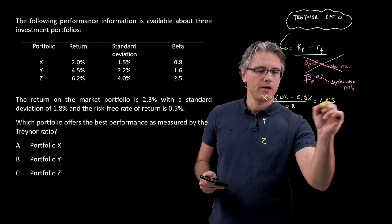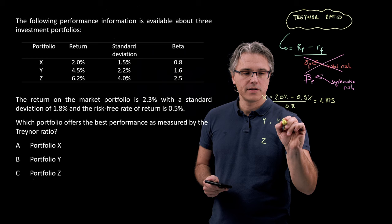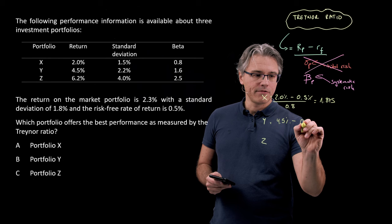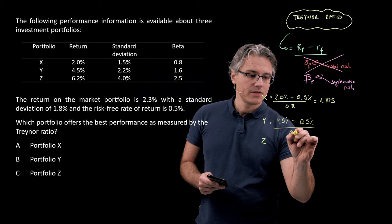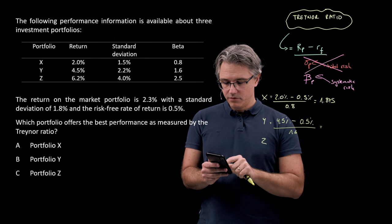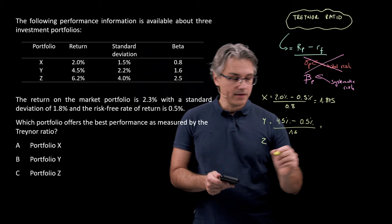Now for the second one, it's going to be a return of 4.5% minus the same risk-free rate, 0.5, and we divide by its beta, which was 1.6. So 4.5 minus 0.5 divided by 1.6—for the second portfolio, that is 2.5.